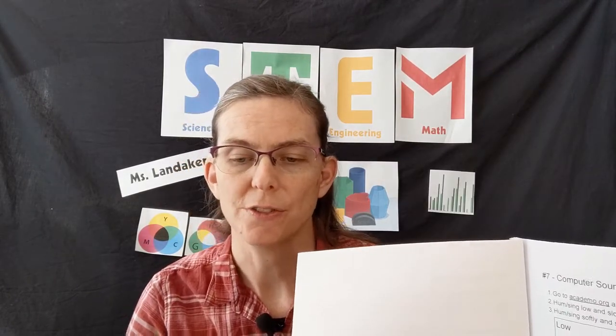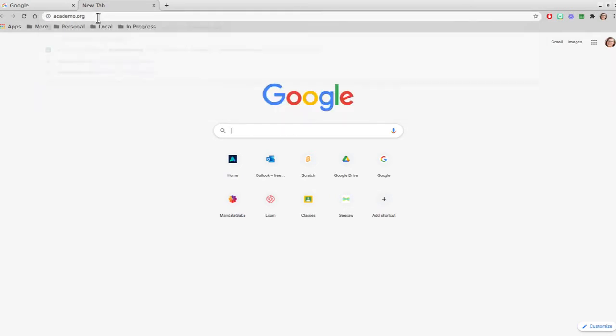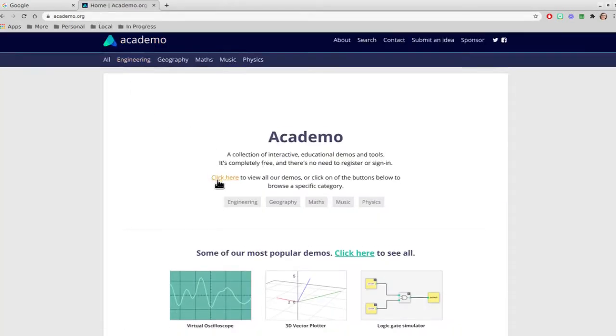Open up your STEM packet to page 9 where it says computer sound. On your Chromebook after you watch this video, you'll need to open up a new tab and type in the URL that it says. Academo.org. Then we'll click on virtual oscilloscope.